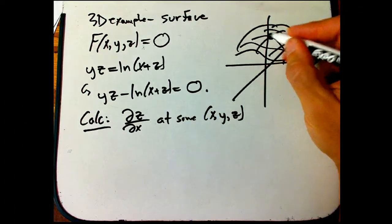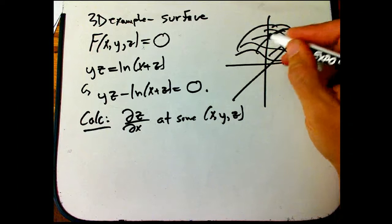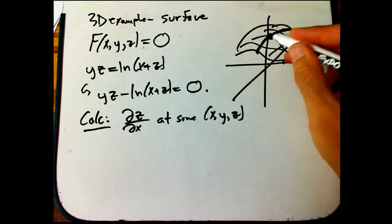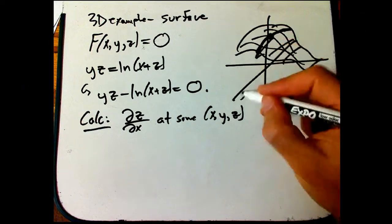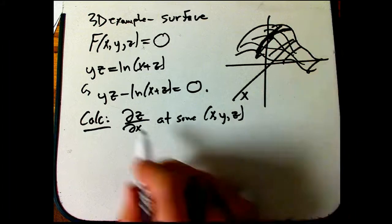So, here's this implicitly defined surface. I want to know if I move along that surface just in the x direction, then what is the slope of that? What is the dz dx? This is the one variable up kind of version.